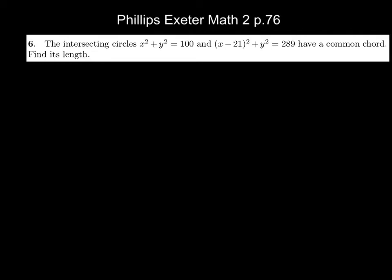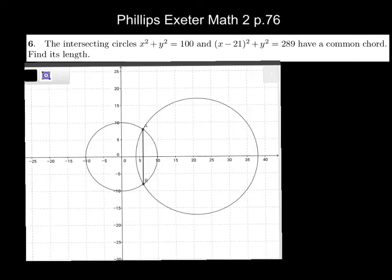That is very insightful, Connor. So let's go ahead and draw a picture in GeoGebra of our circles. The one on the right is substantially larger — we have one larger and one smaller. They do intersect, and we're looking for that common intersection right here. Our goal is to find the length of this chord.